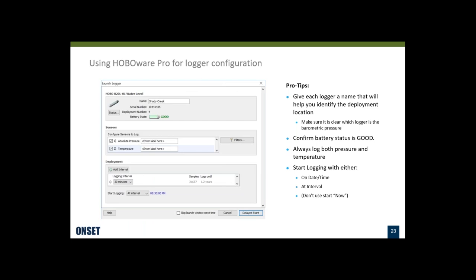Now I'm going to go into using our HOBOware Pro software for configuring the loggers — that's the first step. You can do this in the office or in the field; it's usually easier in the office. You want to give the logger a name so you can recognize where it's going to be deployed — that really helps with processing the data afterwards. Make sure you've got good battery status. You always need to log both pressure and temperature; temperature is really important for temperature compensation of the water level data. Down here you set when it's going to start — either at interval or at a specific date and time.